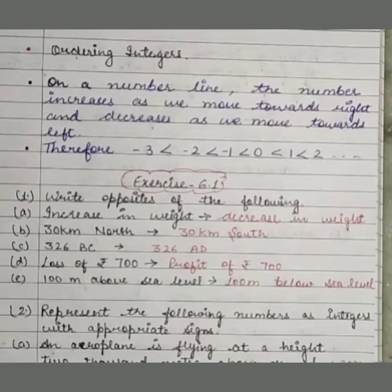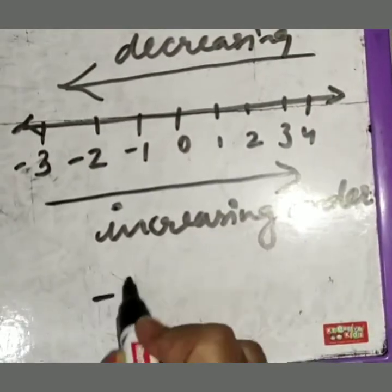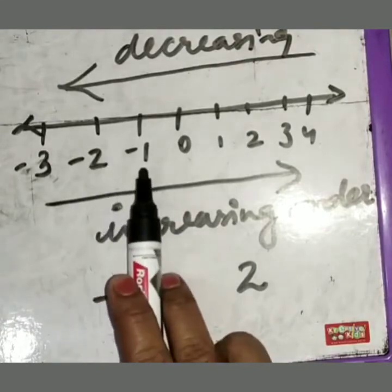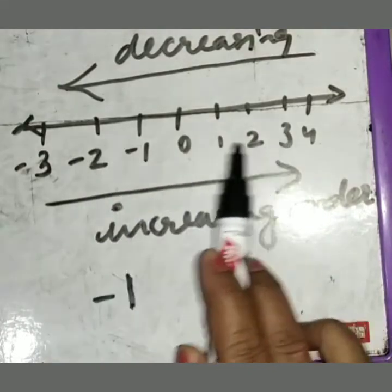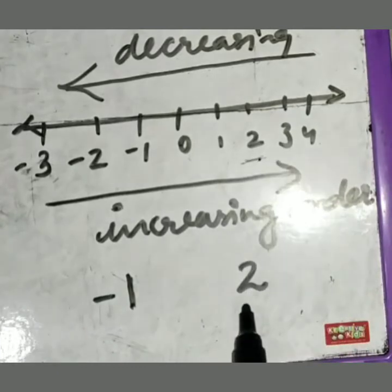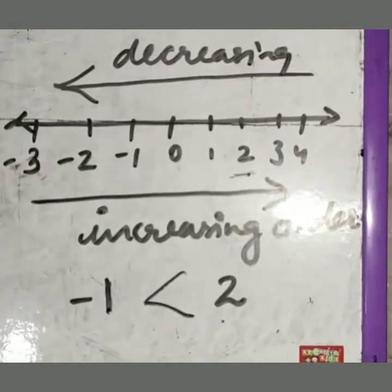Suppose I am taking minus 1 and 2. Which one is greater between minus 1 and 2? See here — this is minus 1, this is 2. Which one is coming on the right side of 0? 2 is coming on the right side, so 2 will be greater. Whenever two numbers are given and one is negative and one is positive, the positive number is always greater.